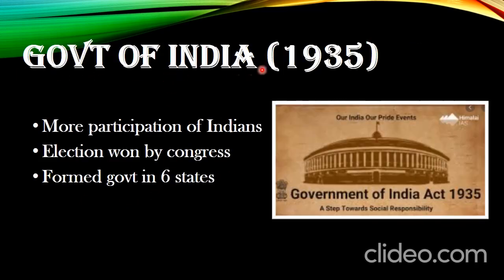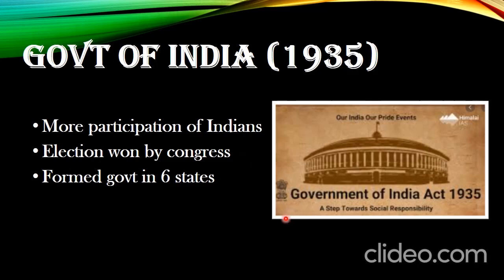The next important event is the Government of India Act 1935, launched by the British Indian government. It is a constitutional law with a lot of reforms. It was a good sign for Indians because more participation of Indians took place. Government elections were proposed and conducted, and these elections were won by the Indian National Congress. They formed a government in six states, which was a great victory for India.